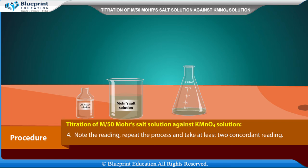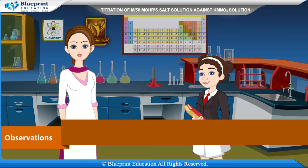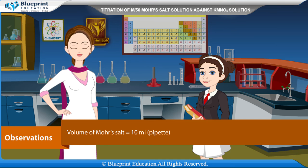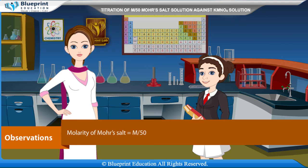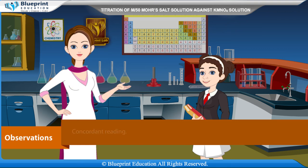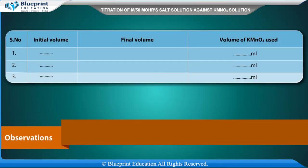Note the reading, repeat the process, and take at least two concordant readings. Observations: Volume of Mohr's salt = 10 ml (pipette). Molarity of Mohr's salt = M/50. Volume of KMnO4 is determined from burette concordant readings — note initial volume, final volume, and volume of KMnO4 used. Concordant volume = X ml.